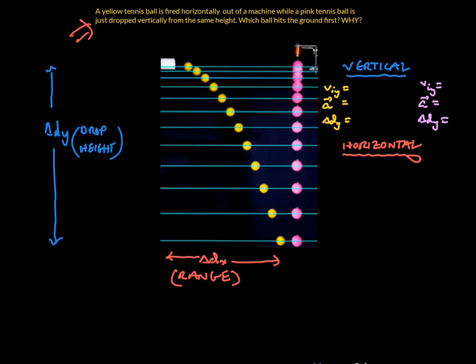It's very tempting to suggest the yellow tennis ball will hit first. Let's attack this from a physics and mathematical standpoint. We'll get Delta T by looking at the vertical components for both. For the yellow tennis ball, V_i_y equals zero meters per second because it was fired horizontally. The acceleration is -9.81 m/s² and Delta D Y is the drop height, say 100 meters.